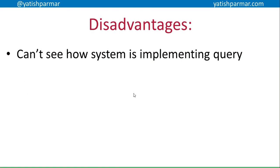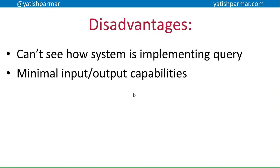The disadvantages are that you can't see how the system is implementing a particular query — you might want to look in depth at how the joins and the data sets are being linked together. There are minimal input and output capabilities. And there's generally poor performance in some forms of AI-based languages. They work better on parallel processing systems.